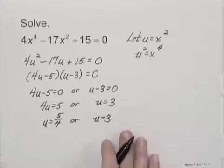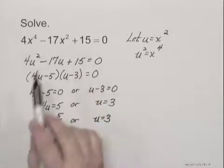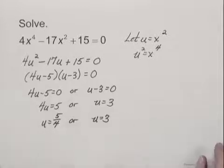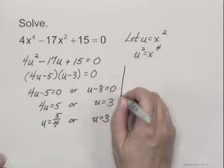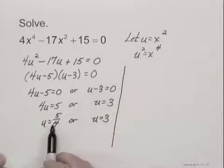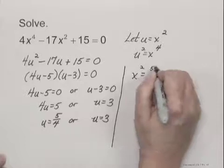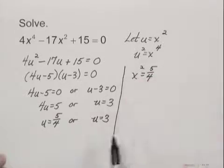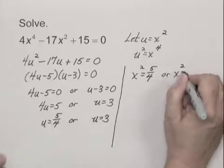Now it's tempting to stop here, but we are not given the original equation with u, we're given it with x. So we need to substitute x squared for u and solve the equations. If we have u equals 5 fourths, we would have x squared equals 5 fourths. For u equals 3, we would have x squared equals 3.